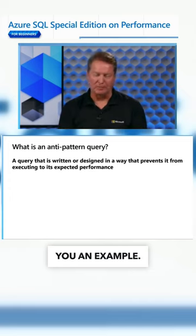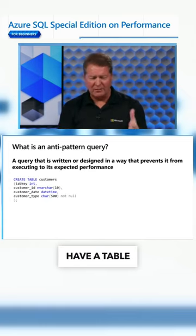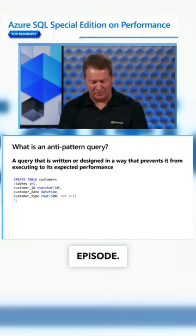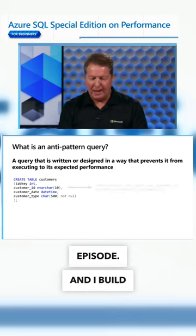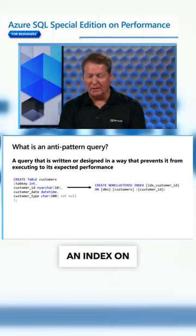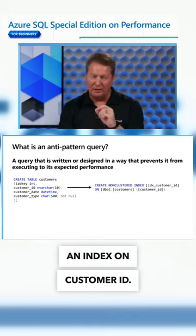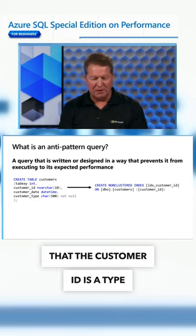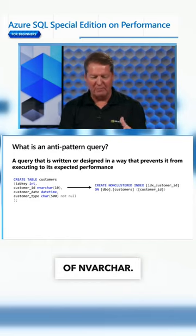Let me show you an example. Let's say I have a table called customers — you saw that in our last episode — and I build an index on customer ID. Notice in this particular case that the customer ID is a type of nvarchar.